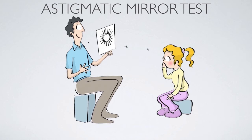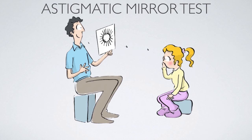You can have astigmatism at different distances, so there is no guarantee that you don't have it at arm's length or even beyond arm's length. Some people have astigmatism only near but not in the distance, and others have it in the distance but not near. You can actually have it at different levels in the distance, and sometimes it changes as you go out. It can be very complicated.